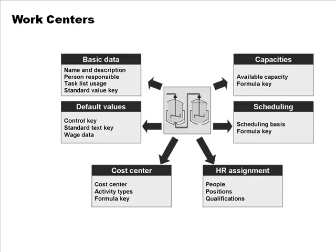When you do routing scheduling, work center information is also used. For example, suppose you have to make 500 units of something using work centers A and B. To find out how long it's going to take, we need to know how much capacity each work center has. If the work center can only make 10 a day, it will take at least 50 days. So scheduling depends intimately on information kept in the work center master data.